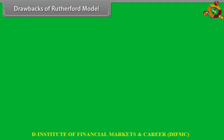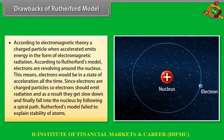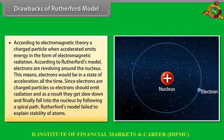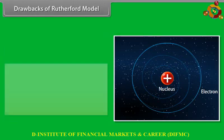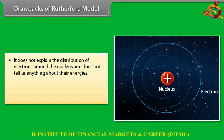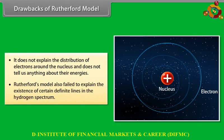Drawbacks of Rutherford's model: (1) According to electromagnetic theory, an accelerating charged particle emits energy as electromagnetic radiation. Electrons revolving around the nucleus are always accelerating, so they should emit radiation, slow down, and spiral into the nucleus — Rutherford's model fails to explain atomic stability. (2) It does not explain the distribution of electrons around the nucleus or their energies. (3) It also failed to explain the existence of certain definite lines in the hydrogen spectrum.